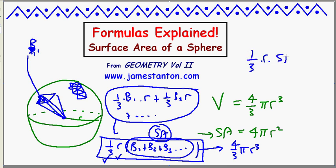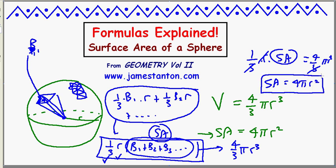So we could say that 1 third times r times the surface area of a sphere really does want to become 4 thirds pi r cubed, the true volume. Multiply both sides by 3, divide both sides by r, and we're left with concluding that the surface area of a sphere must be 4 pi r squared.